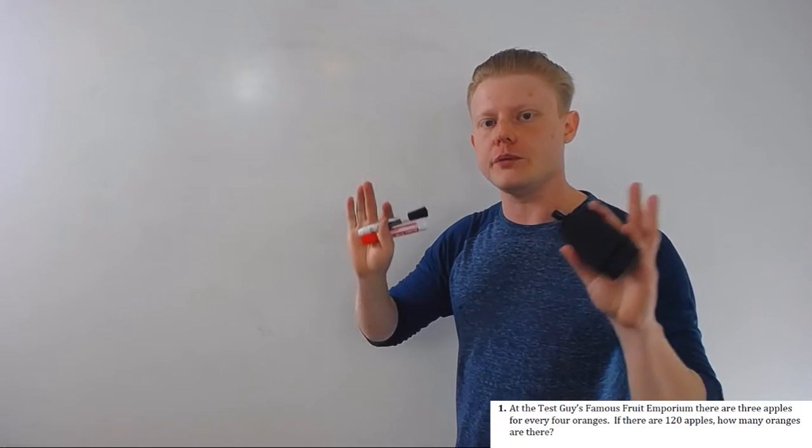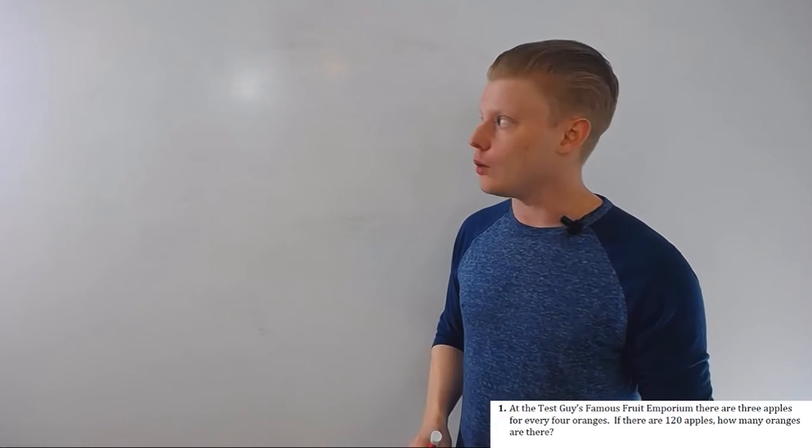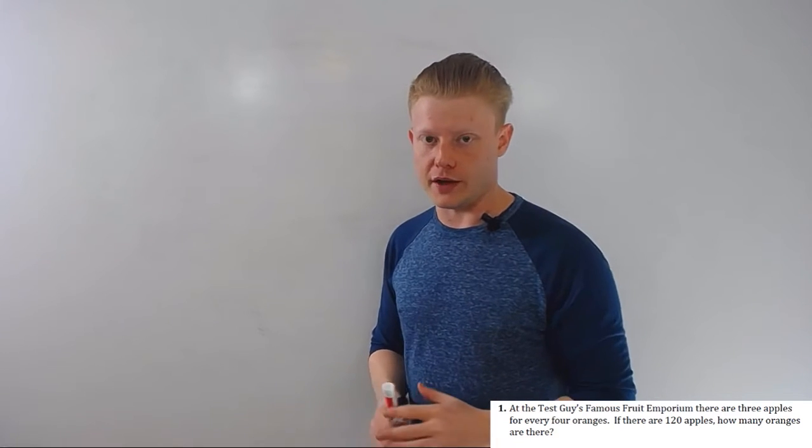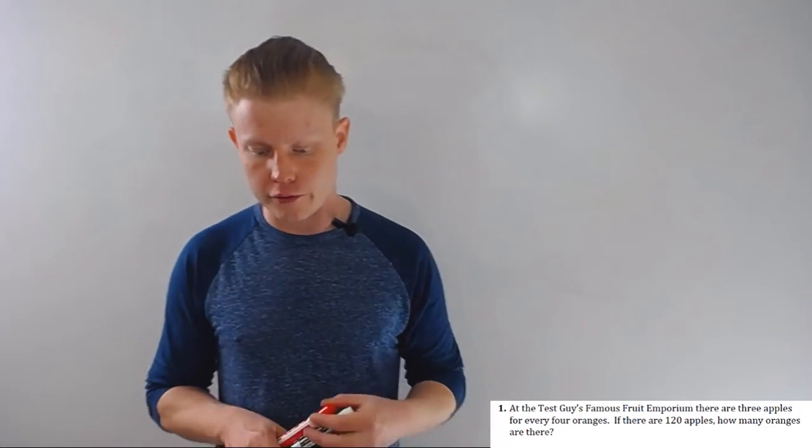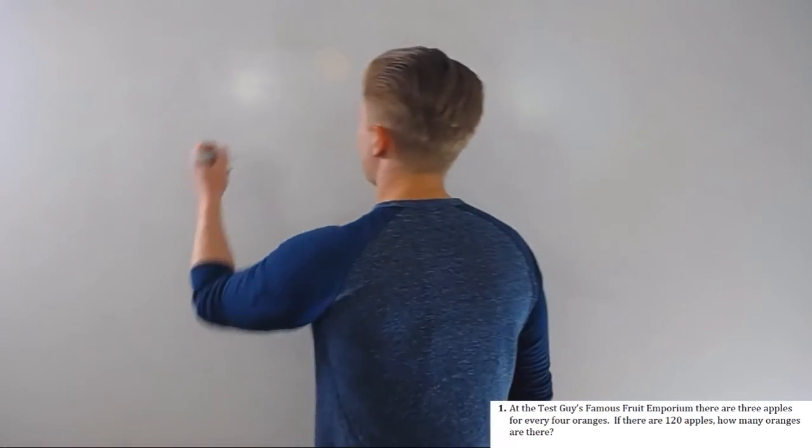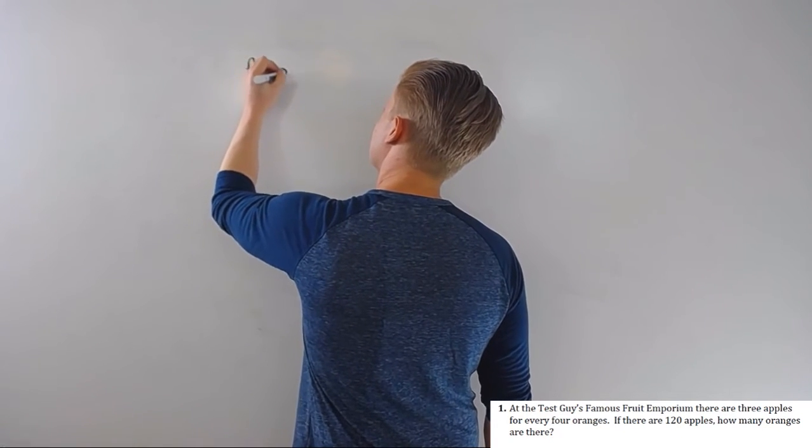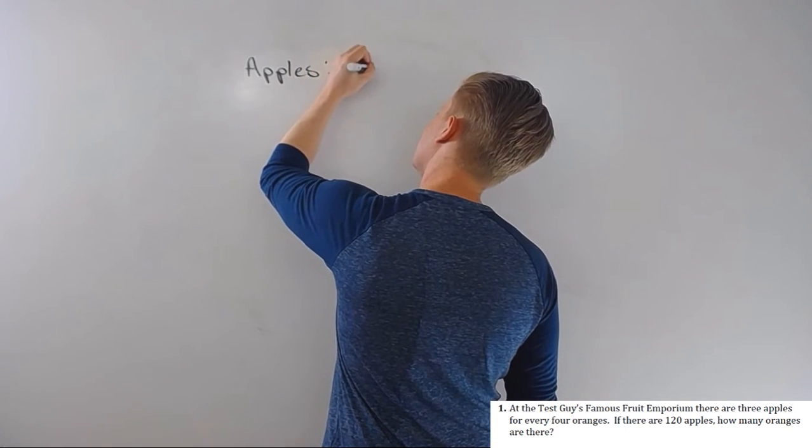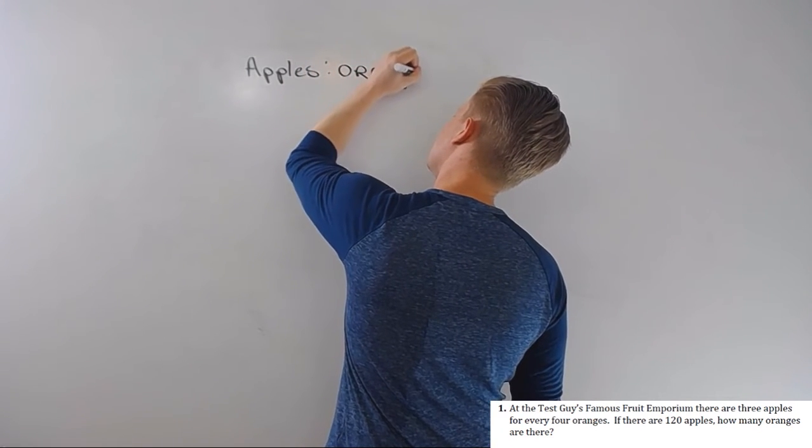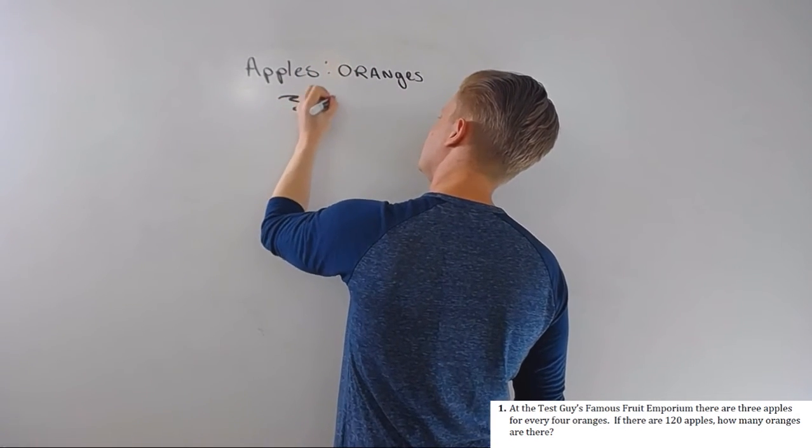So let's look at a word example. Now in the bottom of the screen, I didn't use an ACT example, I use just a regular example out of the book so I could talk a little bit more about the method I would use. At the test, guys, famous fruit emporium, there are three apples for every four oranges. Go ahead, write that down. So apples to oranges is three to four.